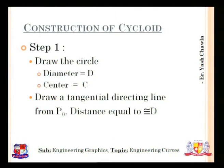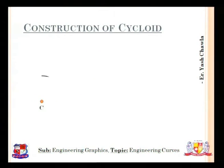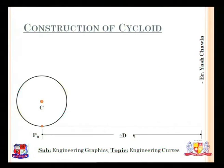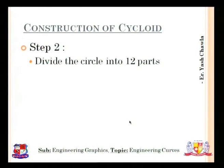Step 1: Draw the circle with diameter d and center Sc. Also draw the directing tangent line from P0 with length equal to πd. In the animation, point C appears, the circle of diameter d is drawn, and from point P0 the directing line of length πd is drawn.